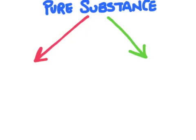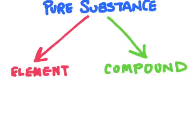The first type of pure substance is called an element and the second type of pure substance is called a compound. Both elements and compounds are considered to be pure substances because we cannot break them down any further into any other types of matter.